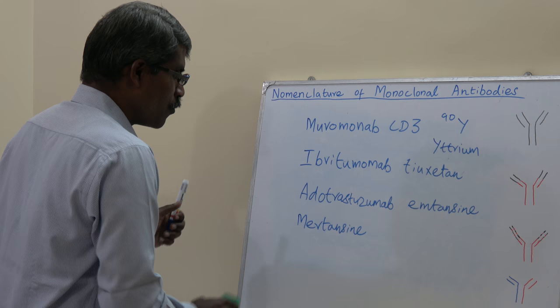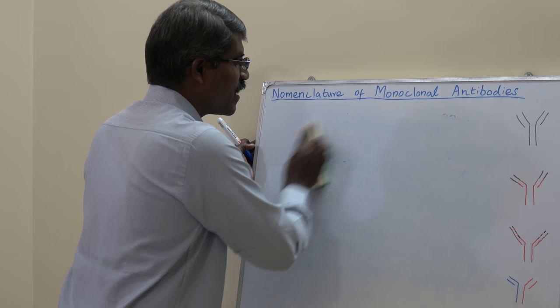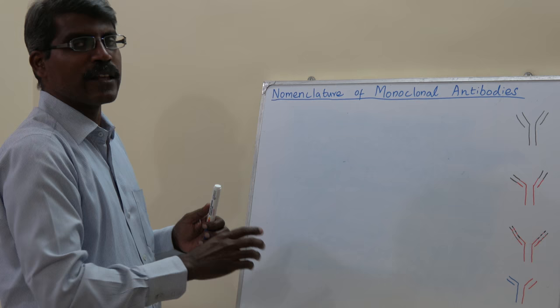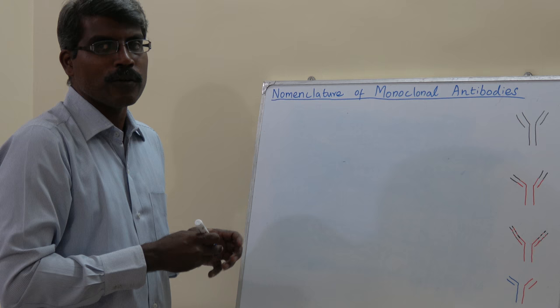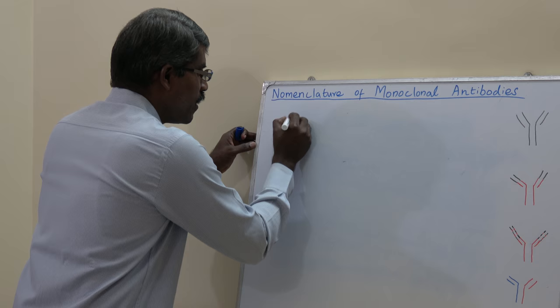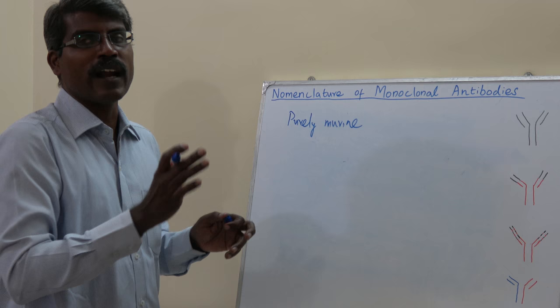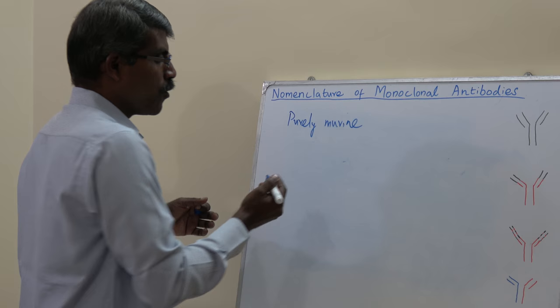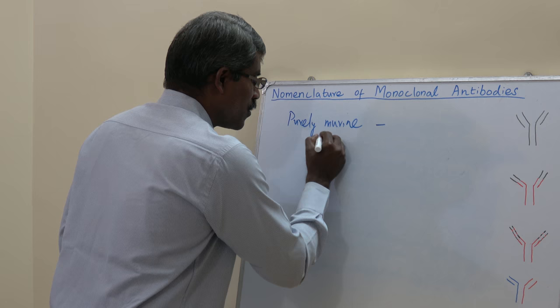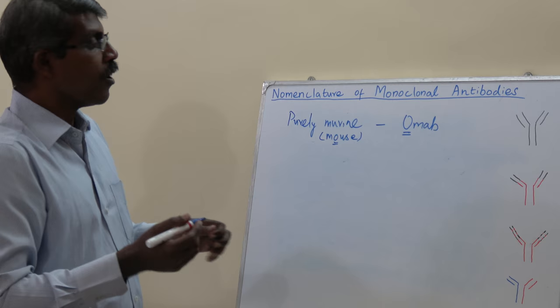The third rule relates to the type of monoclonal antibody, indicated by the fourth and fifth letters from the end. The last three letters '-mab' indicate it is a monoclonal antibody. The first type is purely murine — meaning the full antibody is of mouse origin. The letter 'o' is used for mouse, placed before '-mab', giving '-omab'.